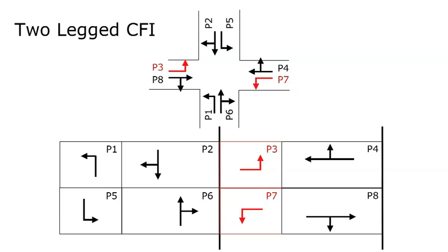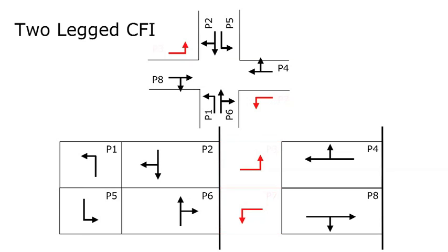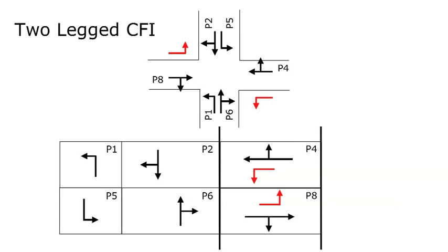With this slide, I'm trying to give you an example of how we can eliminate a phase with a two-legged CFI and reduce overall delay. With Phase 3 and Phase 7 shown at the top intersection layout, the CFI is basically taking the left turns away from the center traffic signal and moving those phases, combining them with the three phases on the approach — here being Phases 4 and 8. As you can see with the animation below, we're able to eliminate one phase at the center traffic signal and thus reduce overall delay time.